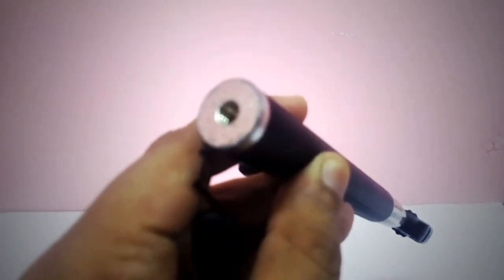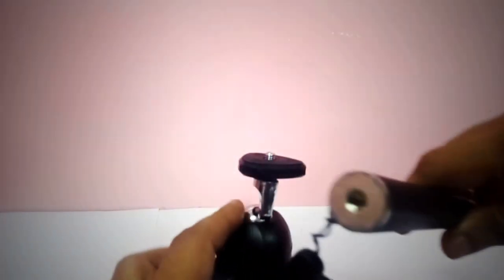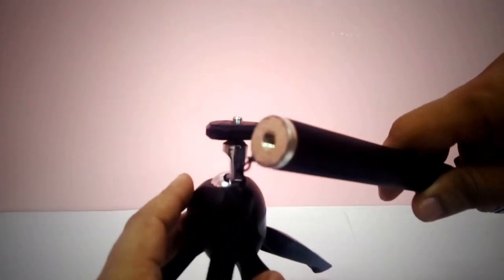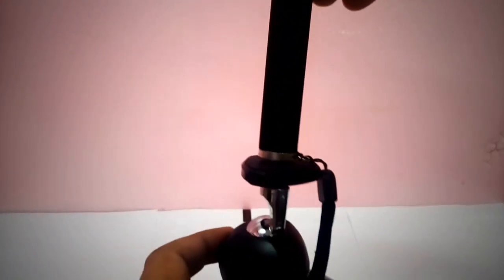The screw hole is for some attachment like this in our mini tripod. So we are going to place it here and tighten it.